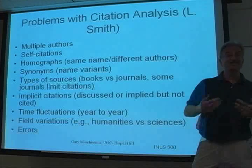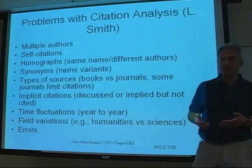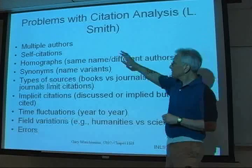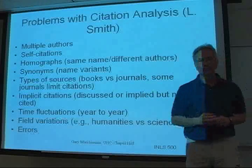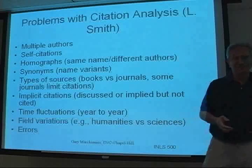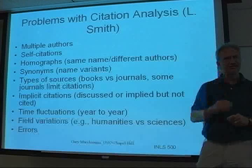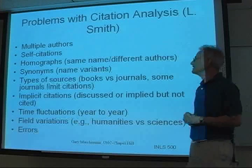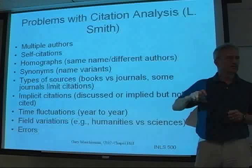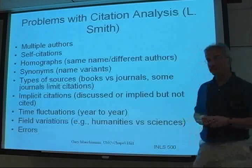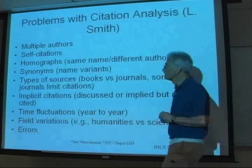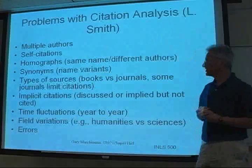Self-citations are another issue — most citation analyses tend to remove self-citations. There are also homographic issues: same name, different authors. There are a lot of Linda Smiths, but there aren't any other Gary Marchioninis. In the internet world, having a really unique name is actually useful. There's also a parallel with people who change their names, which gets problematic if you've had a robust publishing career — you've got to somehow make those connections, and that's hard. Various synonymic events with name variations, hyphenations, and other kinds of prefixes also cause problems.